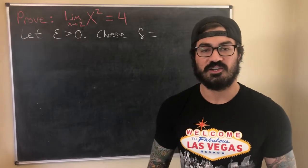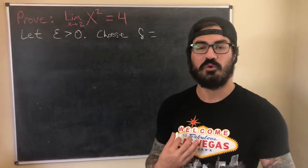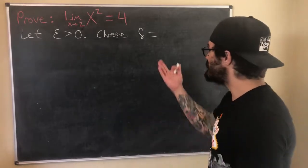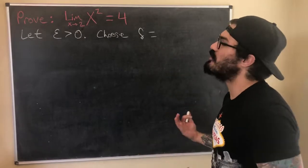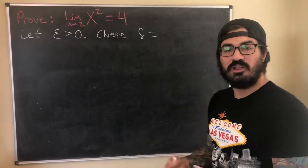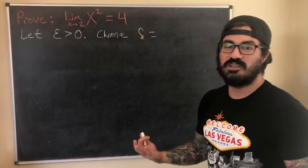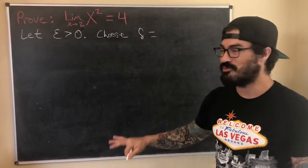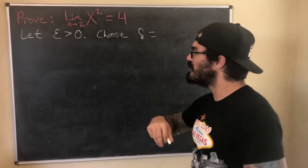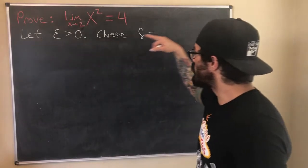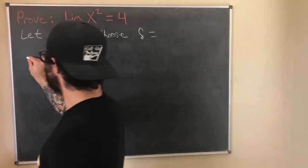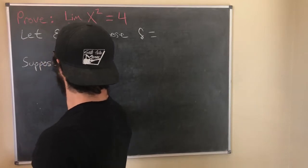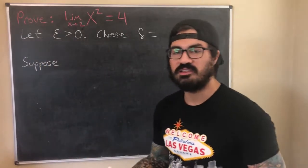Delta is dependent on epsilon. The way I think of it is: you give me an epsilon greater than zero and I can give you a delta — we can keep going back and forth, and for any epsilon you give me I can give you back a delta. So delta is sort of a function of epsilon. But this is where a lot of the work in these proofs comes in, because I don't know what to choose for delta until I do some scratch work and figure that out.